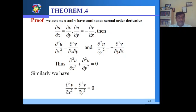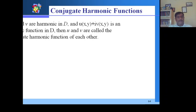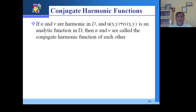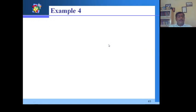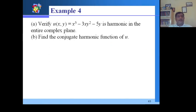Now we will discuss conjugate harmonic functions. If u and v are harmonic in D and u(x,y) + i·v(x,y) is an analytic function in D, then u and v are called conjugate harmonic functions of each other. We will give one example: verify that u(x,y) = x³ - 3xy² - 5y is harmonic in the entire complex plane and find its conjugate harmonic function.